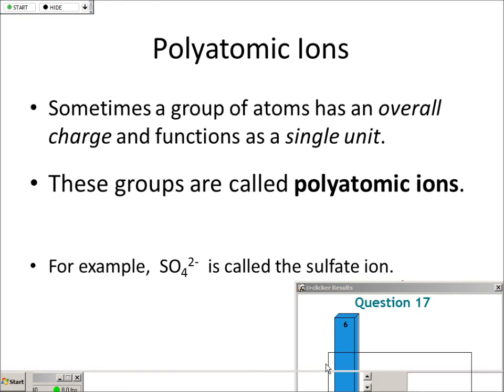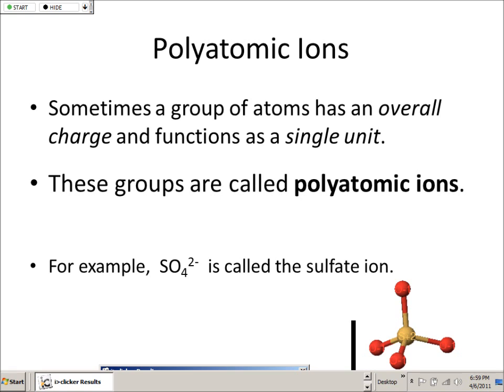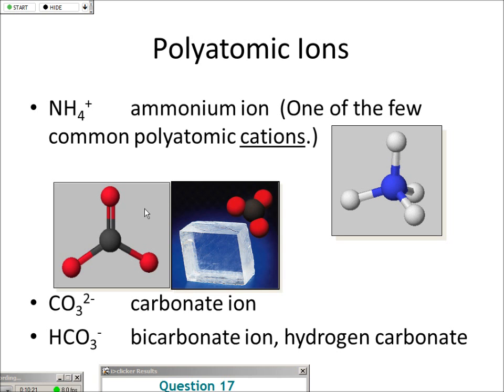Sometimes a group of atoms has an overall charge. For groups of atoms bound together by sharing electrons, they're not really divisible. If that grouping has a charge, it's multiple atoms — so it's polyatomic — and it has a charge, so it's an ion. You see these a lot: sulfate, and sulfuric acid contains sulfate. The ammonium ion is a cationic polyatomic ion with a plus charge. Carbonate, bicarbonate — you don't need to memorize these; they're in the notes, and they're pretty common.